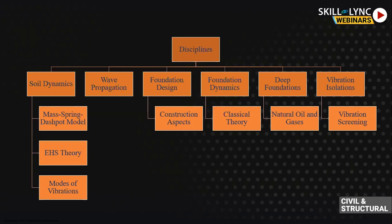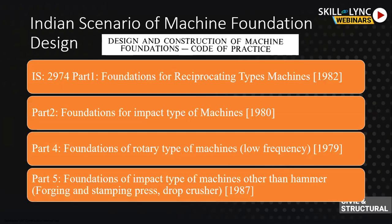Regarding the Indian scenario of machine foundation design, there are four common Indian Standard codes under IS 2974 for design and construction of machine foundations. These are very old codes — revisions from 1979, 1980, 1982, and 1987. They cover reciprocating machines, impact-type machines, rotary machines, and hammer/forging/impact machinery. For recent applications such as offshore and oil machine foundations, there are no specific mentions in these codes.